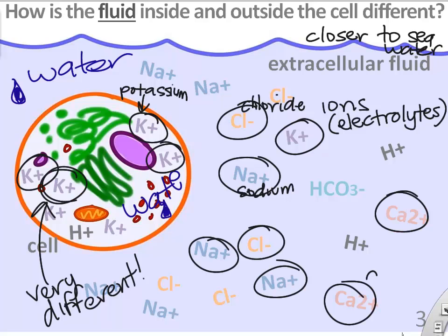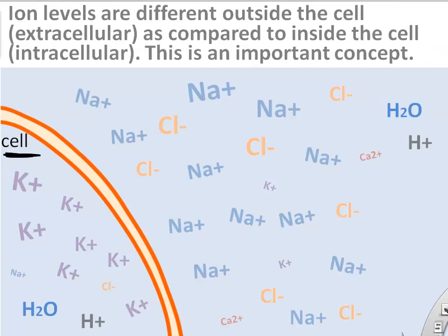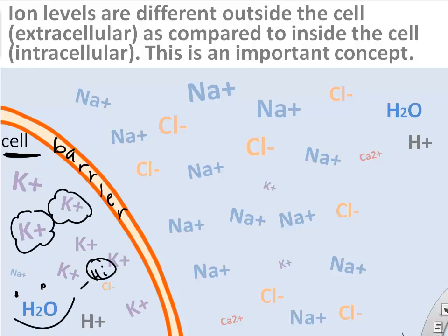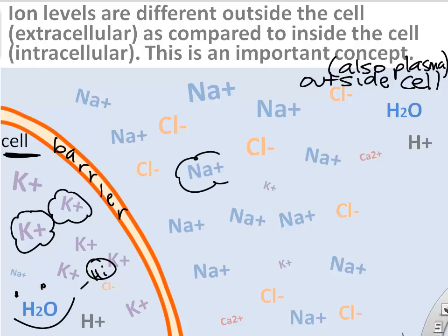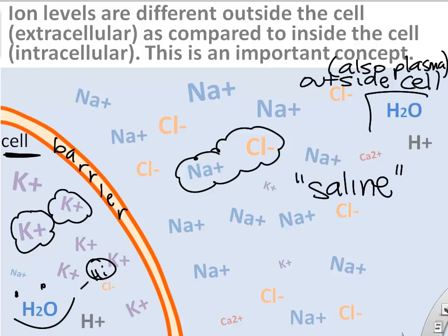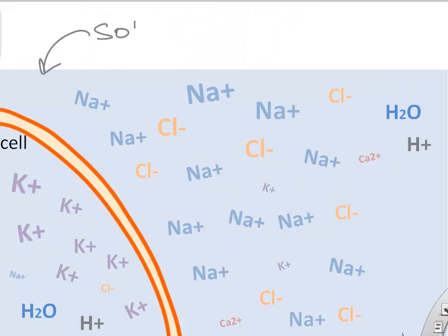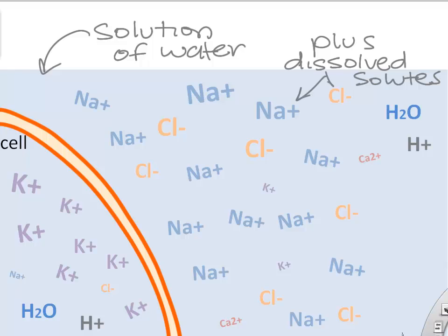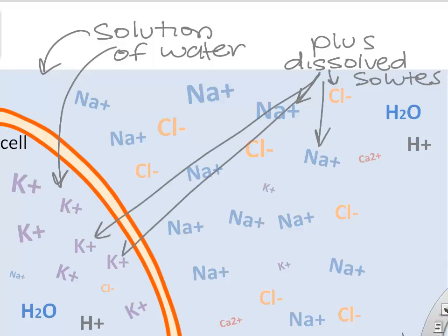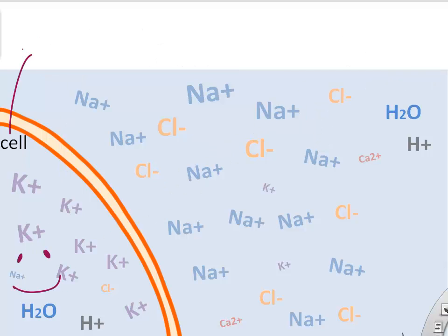We'll see when we learn about the brain, heart, nervous system, and cardiovascular system why that fluid difference is so important. Our cells have a barrier separating the inside from the outside to keep fluid composition different. Saline — basically sodium, chloride, and water — is really similar to the fluid we find outside our cells. The fluid environment is the water molecules and all that stuff dissolved in them.